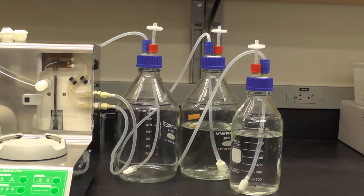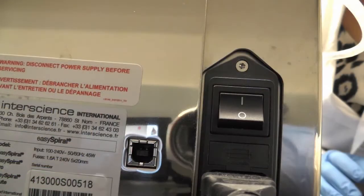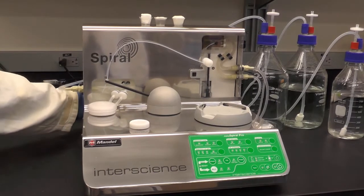Tubes in the disinfectant and sterile DD water bottles should be submerged in the liquid, while the waste bottle should be emptied prior to running your experiment. Turn the power switch located at the back of the instrument to the on position.